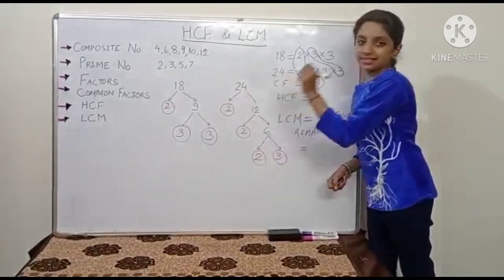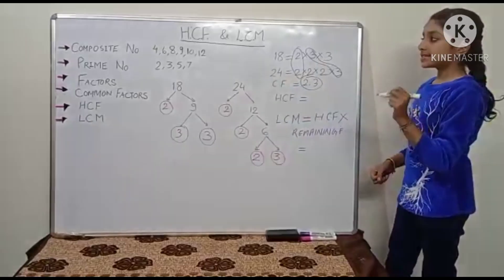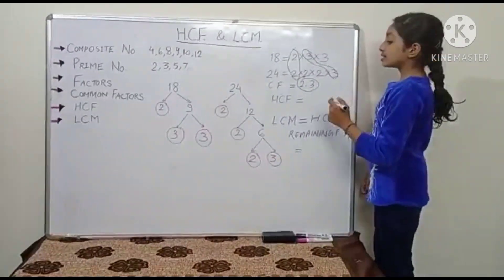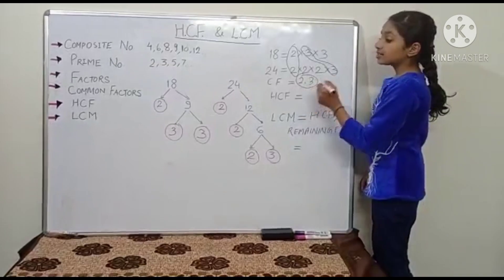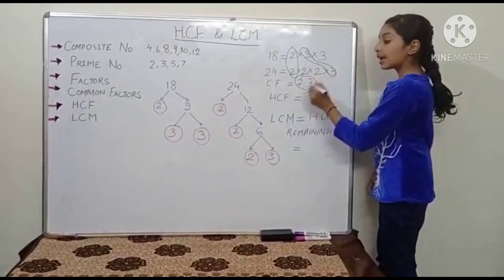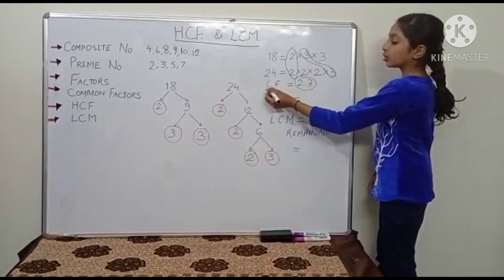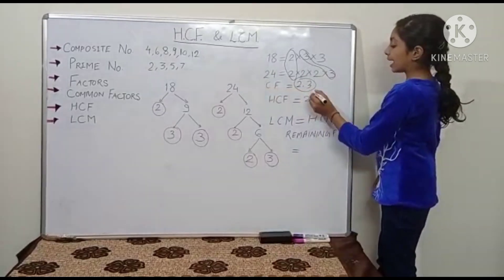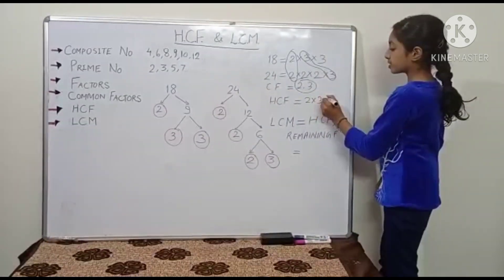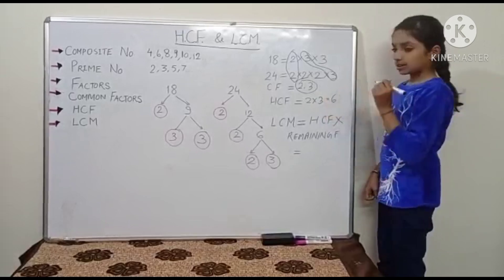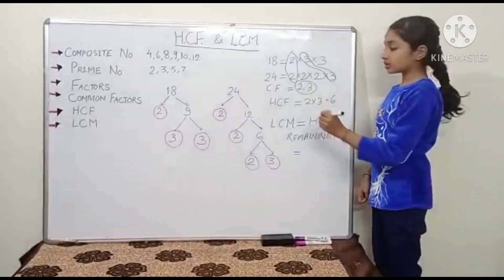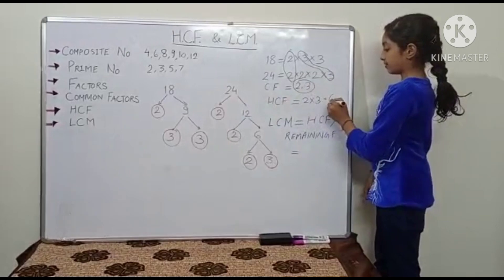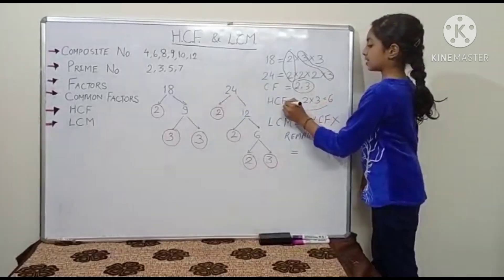Now HCF, which means Highest Common Factor. To find the HCF, we multiply the common factors, which are 2 and 3. So 2×3=6. Therefore, 6 is our HCF.